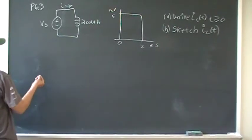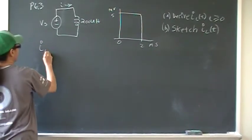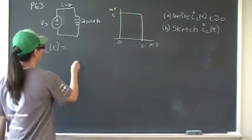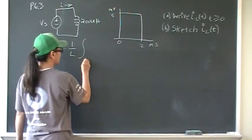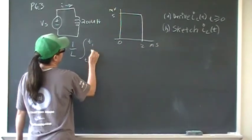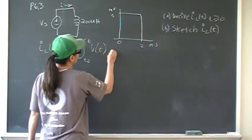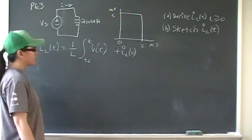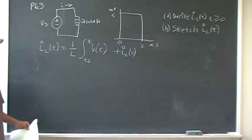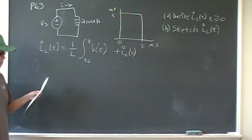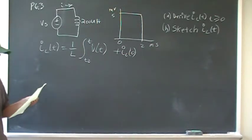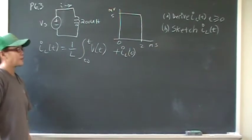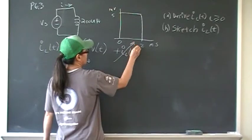For part A, we have to recall that the current through the inductor is given by 1 over inductance, integrated from 0 to T of V(T) dt, plus the initial current. We're told that the current through the inductor is 0 for time less than 0, so the initial current is 0.